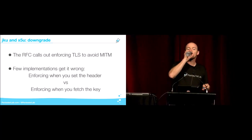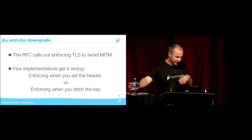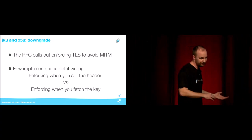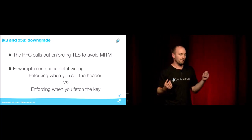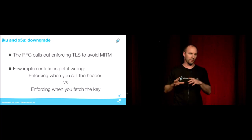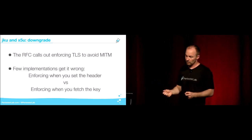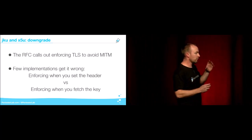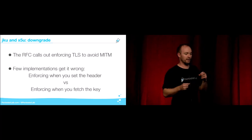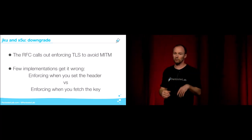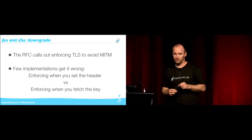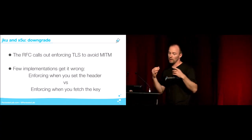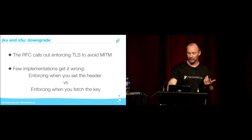Another issue: the RFC says to avoid man-in-the-middle by using HTTPS. Some implementations check that the JKU URL starts with HTTPS when creating the token — but you don't actually care about that. What you need to check is when you retrieve the key. The person providing the JKU is the attacker — they control that value. So you should enforce TLS when you fetch the key, not when you create the token.